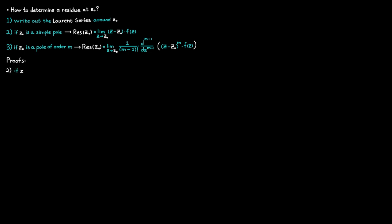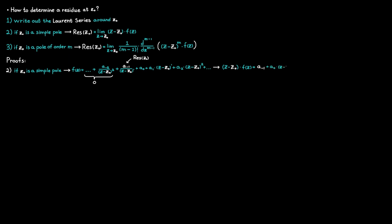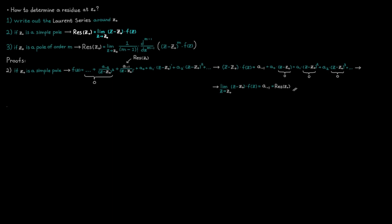If C0 is a simple pole, then the Laurent series expansion around C0 has the property that all higher-order negative terms are zero, since the pole is of order one. We try to isolate the coefficient a_{-1}, which is our residue, by multiplying both sides by (c − C0)^1 to free it up. Then we take the limit on both sides as c approaches C0 — all the remaining parentheses become zero — and this formula gives us the coefficient a_{-1}, also known as the residue. This is the same formula we had listed as the second option, so we have proved it.